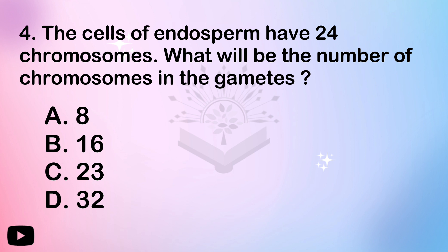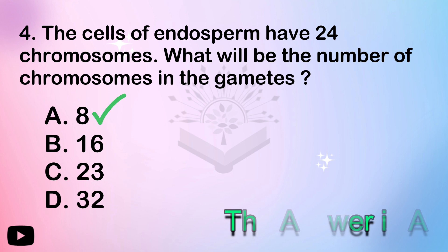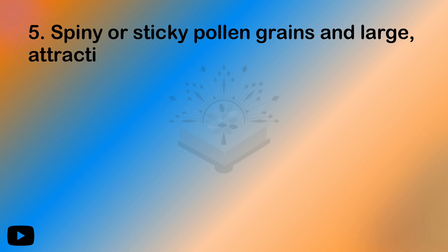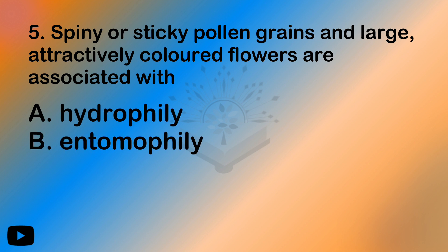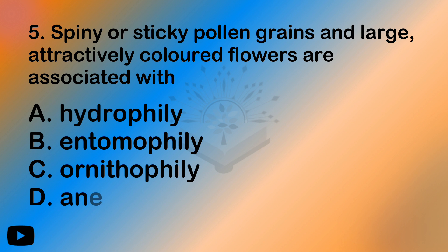Every ovule becomes a fruit. That is the example from NCERT — an apple, where I have a portion of the apple. That is where the apple part comes from.